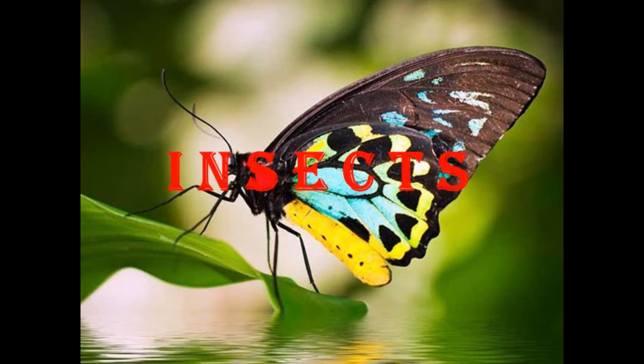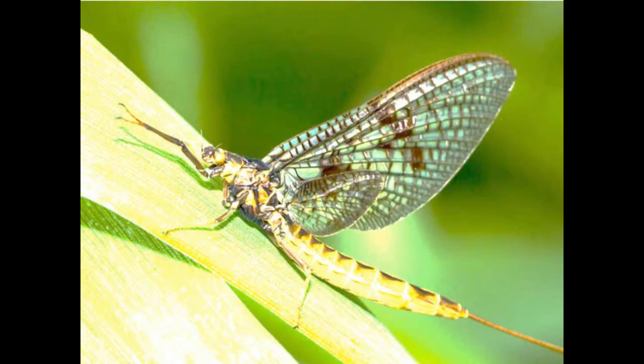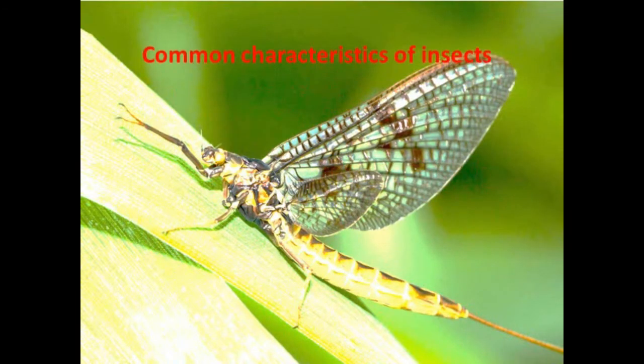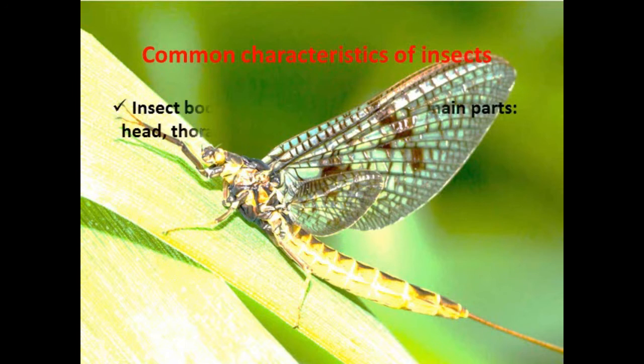The first topic is insects. Do you know what insects are? Good, that's right — serangga. Examples include mosquitoes, dragonflies, grasshoppers, and butterflies. Those are examples of insects. Now let's look at the common characteristics of insects.